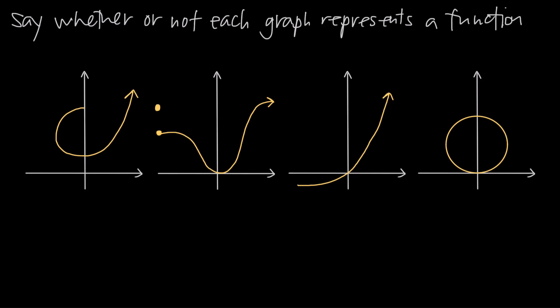In this video, we're talking about the vertical line test and how to use the vertical line test to say whether or not a graph represents a function. So let's talk about a few things first: a function versus an equation. Remember that an equation is just any expression with an equal sign.